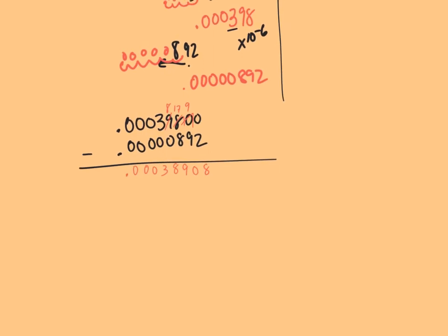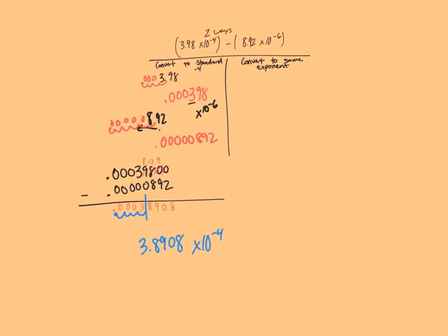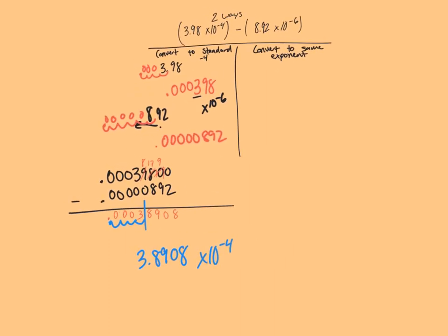There's my answer, but I need to write it in scientific notation. So I'm going to put my decimal point there to get 3.8908. In order for it to be totally accurate, I need to move my decimal 1, 2, 3, 4 to the left, so times 10 to the negative fourth. We'll take a look with the other way to see if that saves a little bit of time and process, since we know we won't have to convert back to scientific notation at the end.